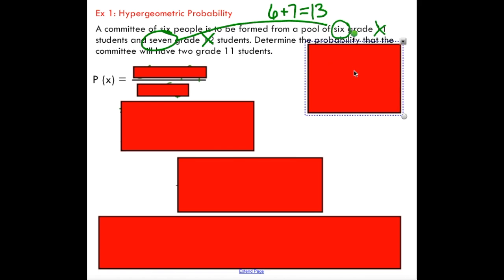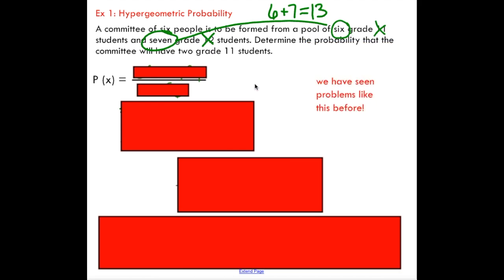We've actually seen problems like this before. If you think back to the choose operation, on the bottom we need the total number of outcomes. We've got 13 people in total and we're choosing six for committee. If we have six grade 11 students we want to choose two grade 11 students. So we have six choose two but we also have to multiply by the rest of the outcome. I've got seven grade 12 students and if you think how many do I want to choose well I've already chosen two and I need six people in total so that should leave me with four.